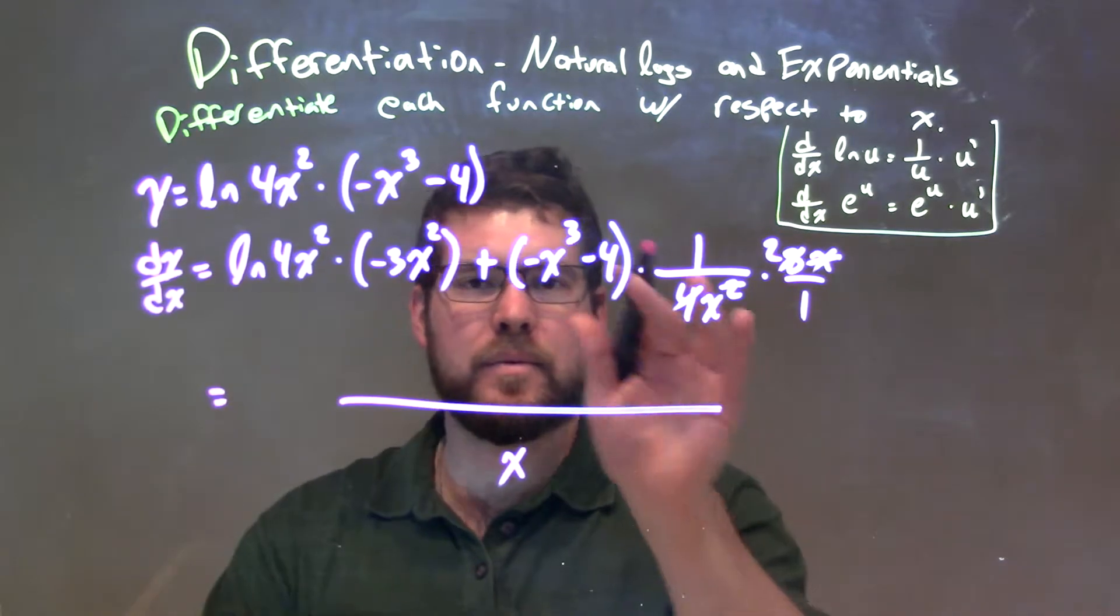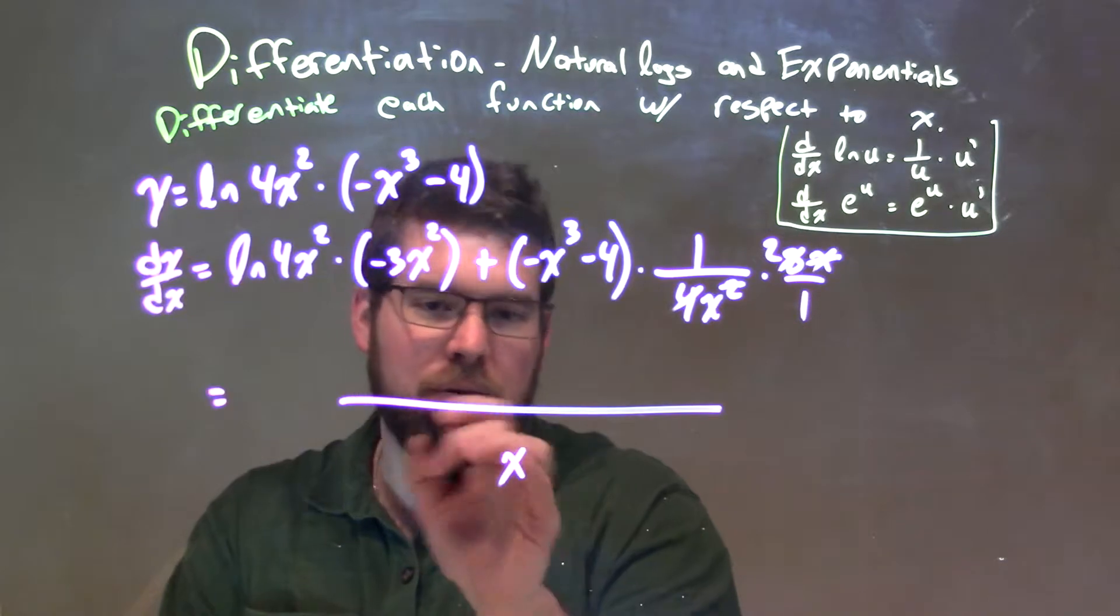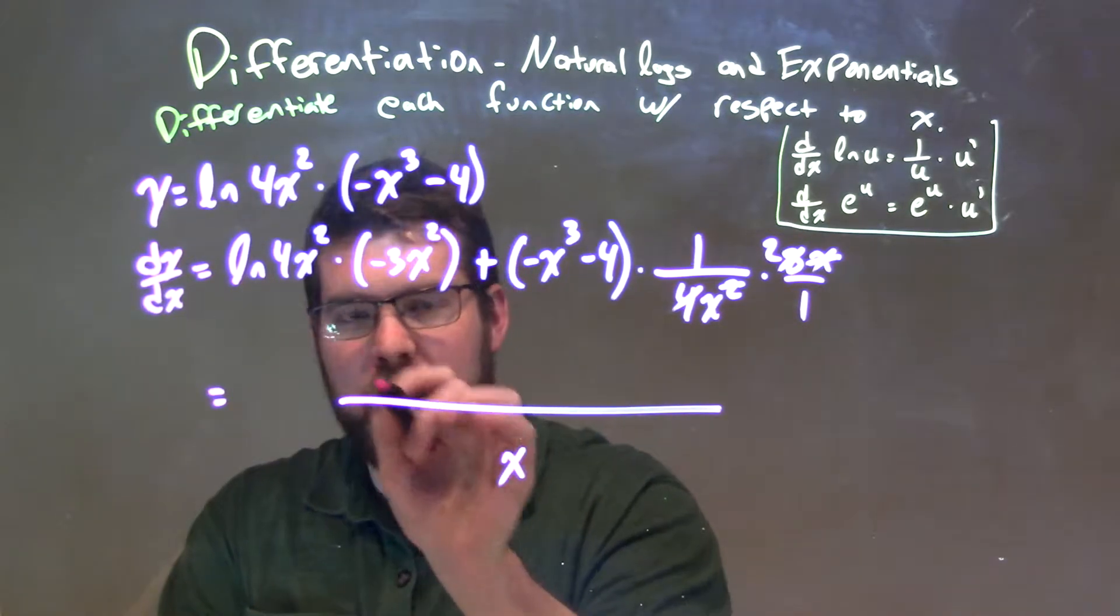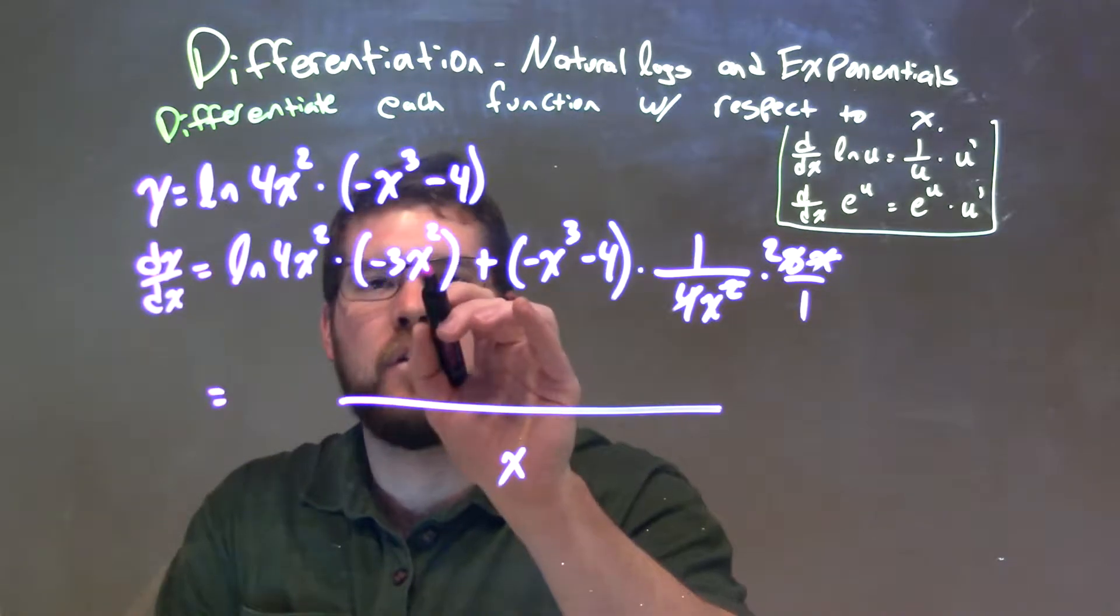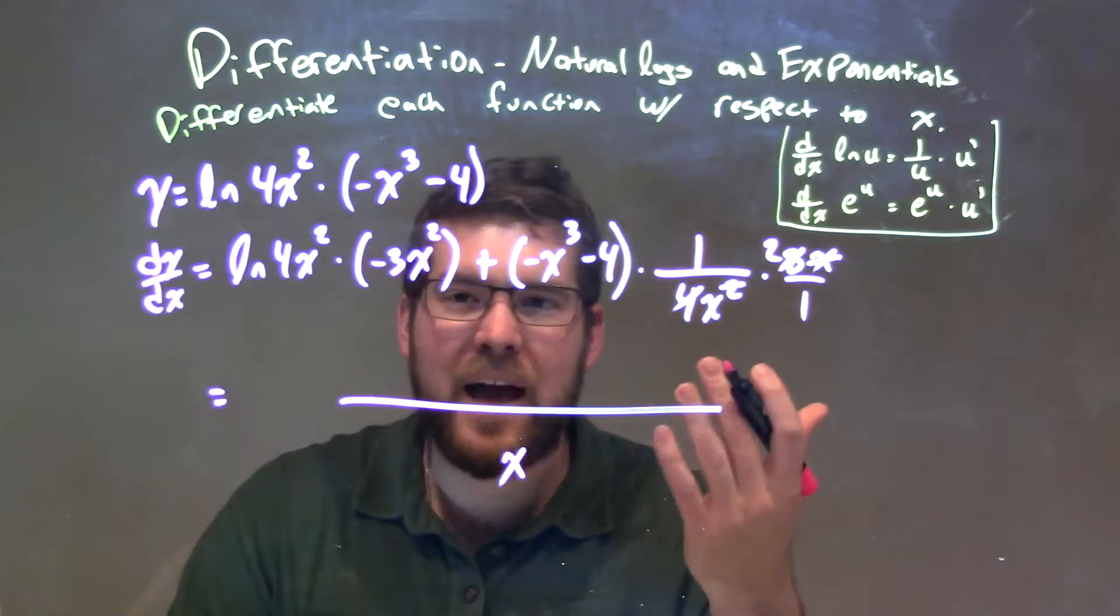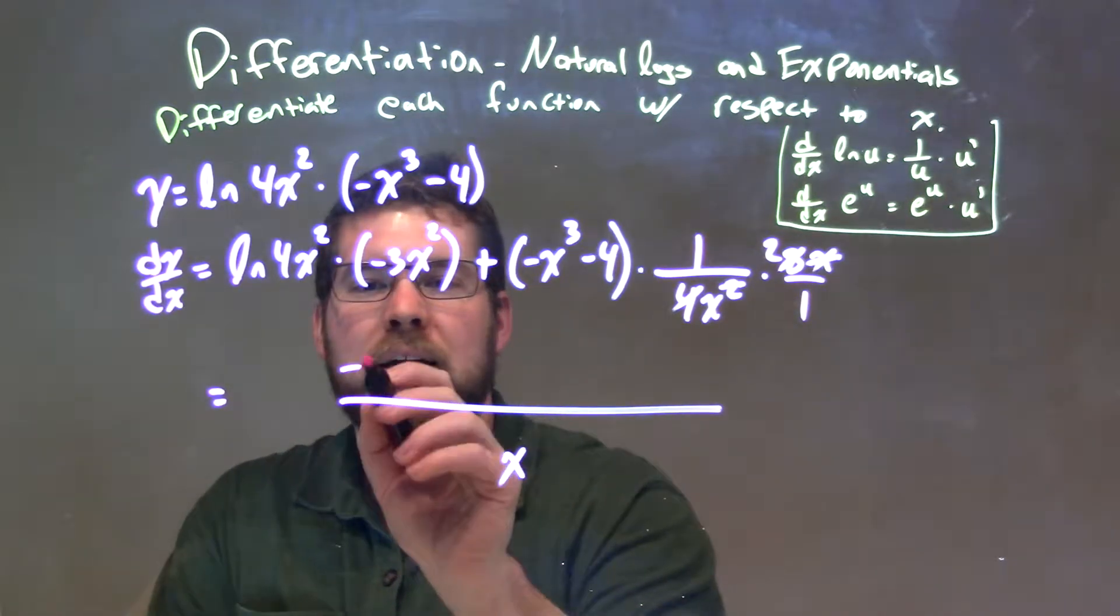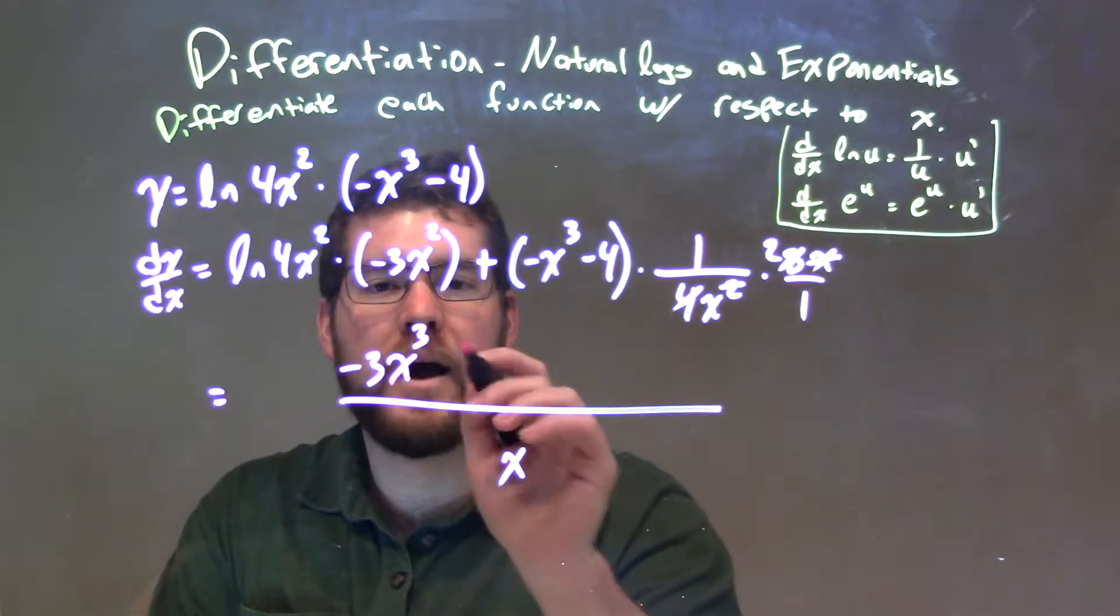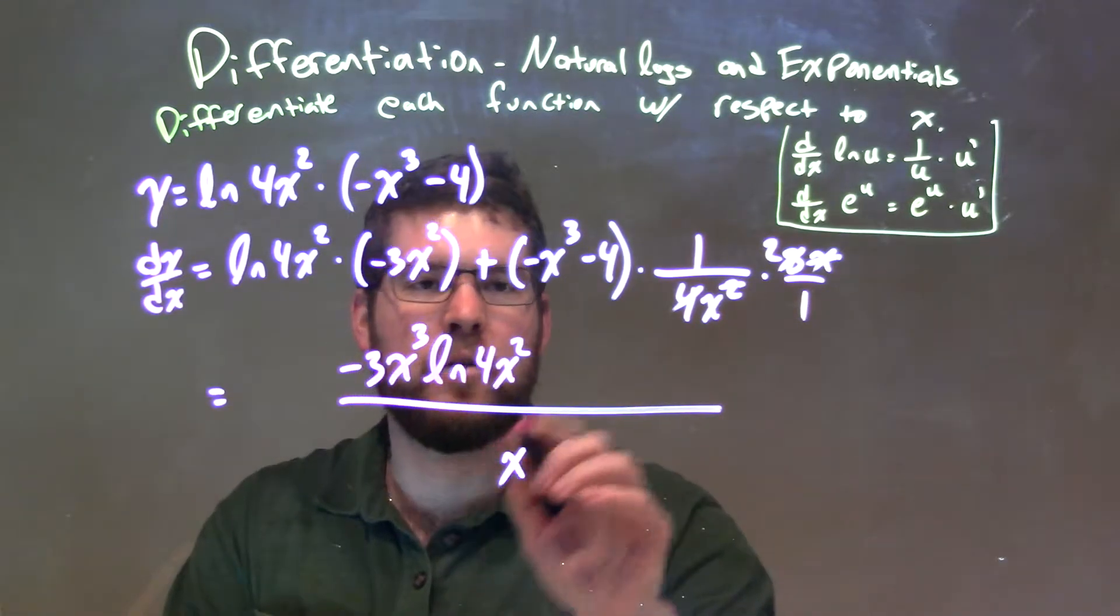The x in the denominator, so we multiply this side by x over x. We already have, well, the x down here counts as being divided by x, but to bring it to the other fraction, we multiply this part by x. So, as we have x squared, we just multiply that by x, and it becomes x to the third power. Let's put that out front, so we have negative 3x to the third power times the natural log of 4x squared. So, we've got that front part taken care of.